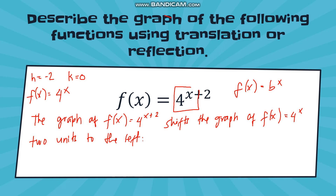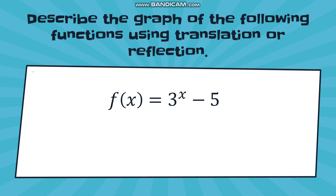Another example: f(x) = 3 raised to (x minus 5). Here h is equal to zero since no constant is added or subtracted from x, and k is negative 5. The reference function is f(x) = 3 raised to x. Since h is zero, there is no horizontal translation. Since k is negative 5, there is vertical translation — the graph shifts downward by five units.